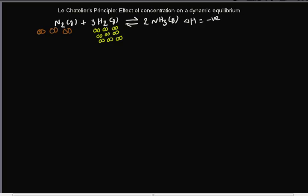Let's take this example — the Haber's process. So I have three molecules of nitrogen and nine molecules of hydrogen. Let's say I'm increasing the stress by adding more nitrogen. Originally it was three; now I'll make it six. So we increase the concentration of nitrogen alone — that is the stress here, increasing the concentration of nitrogen.